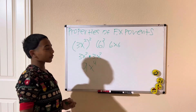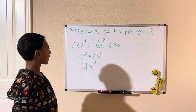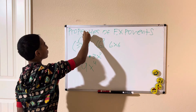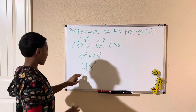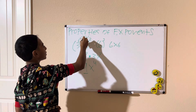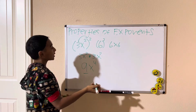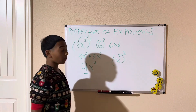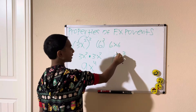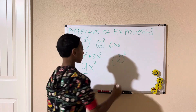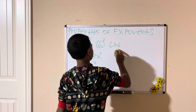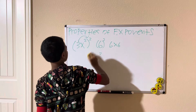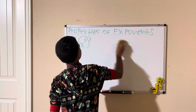Here's another method for the same problem. We take 3 to the power of 2, which is 9. Then for x squared raised to the second power, we multiply the exponents: 2 times 2 equals 4, giving us x to the fourth. Either way we get 9x to the fourth. That's what we get when we simplify.